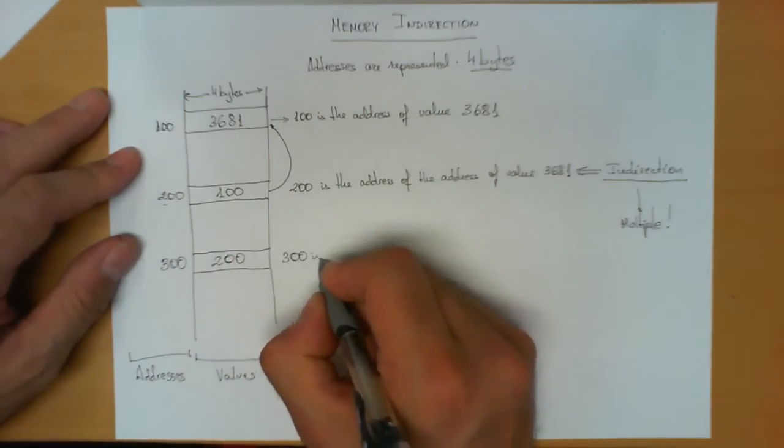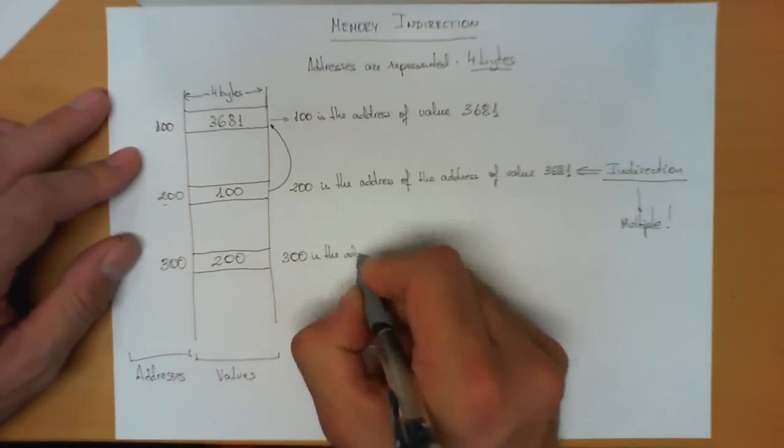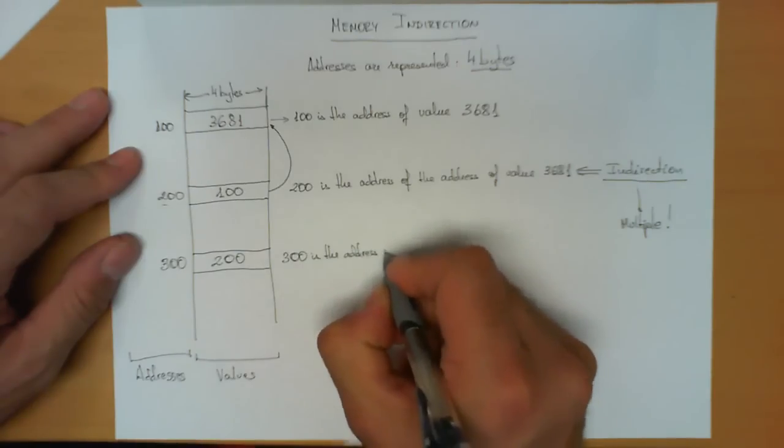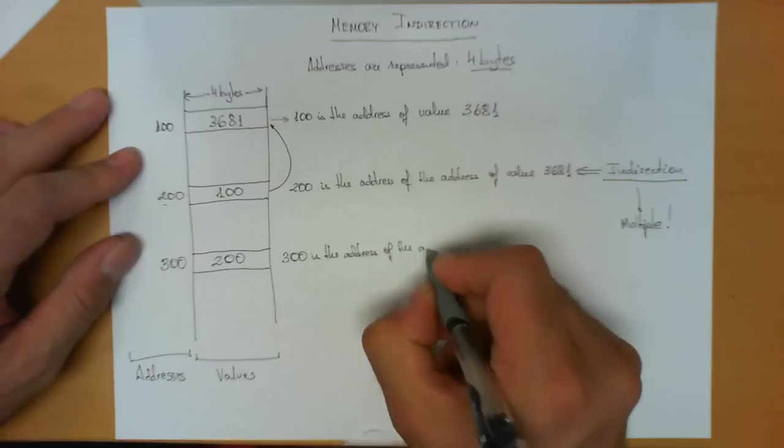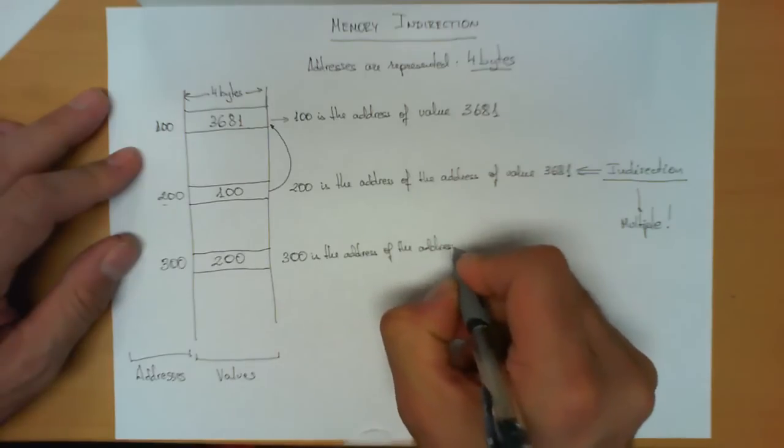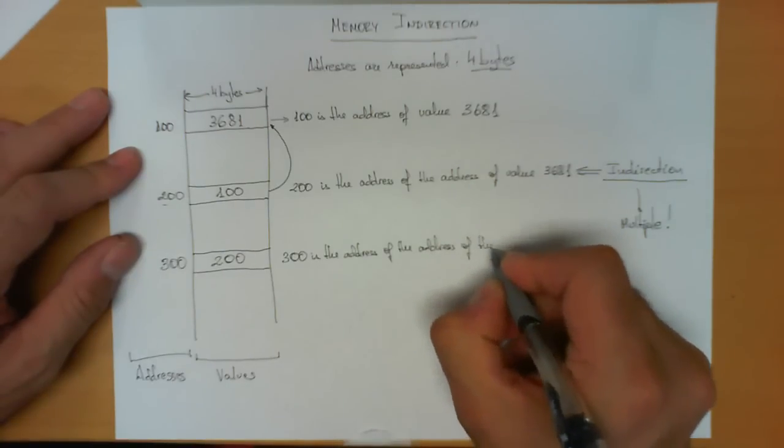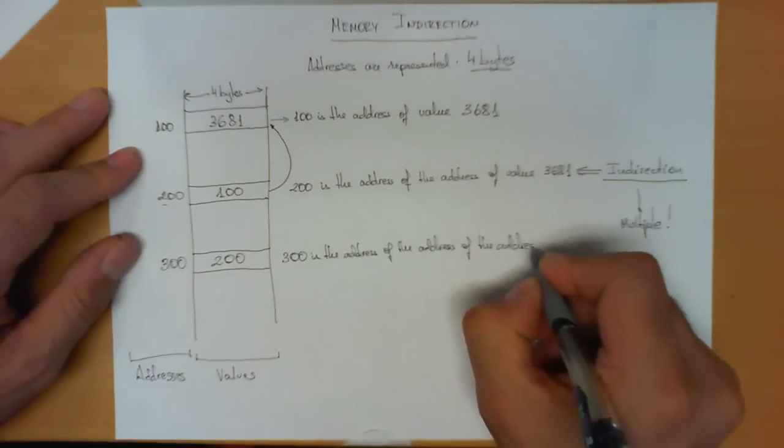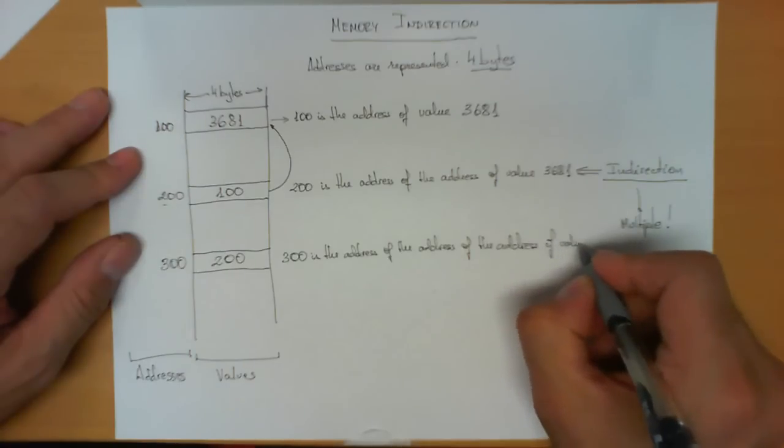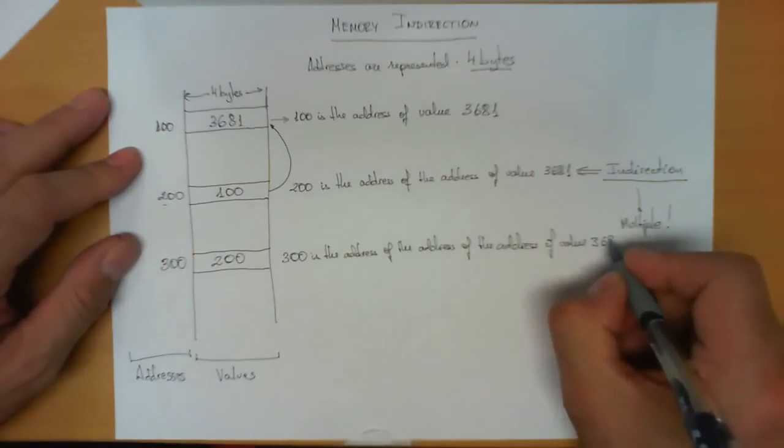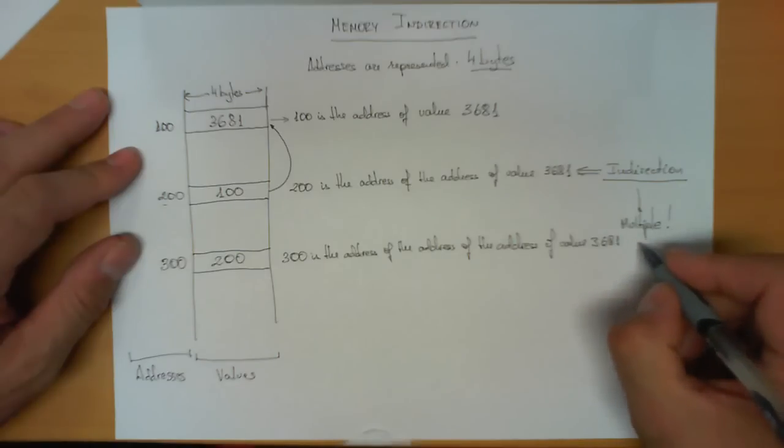Now, what we can say is 300 is an address, and in fact is the address of, and we write what we wrote up there, of the address, of the address, of the value 3681.